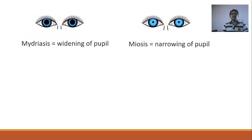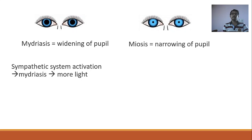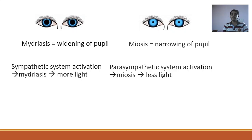Mydriasis is widening of the pupil and miosis is narrowing of the pupil. With mydriasis more light enters your eyes and with miosis less light enters your eyes. Mydriasis is seen with sympathetic system activation and miosis is seen with parasympathetic system activation.